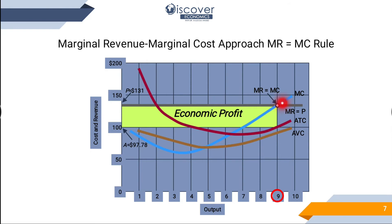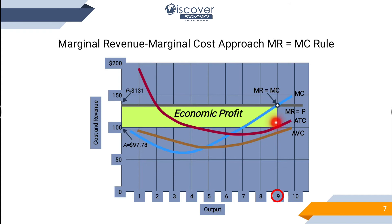Where MC and MR touch, we know that our break-even point is there. You have to produce such quantities and charge such a price at the break-even point. To tell if you are in profit or loss, you look at where the average revenue line is. P equals AR equals MR is our assumption. Where the average revenue point is above the average cost point, average revenue is greater than average cost and that's why we see economic profit here.